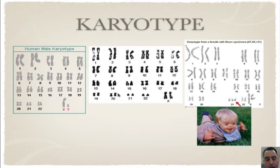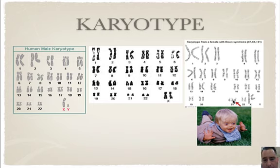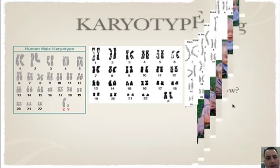Looking at another karyotype: everything looks paired except for chromosome 21. When you have three copies of chromosome 21, that's called Down syndrome or trisomy 21, which can lead to a lot of defects in child development.